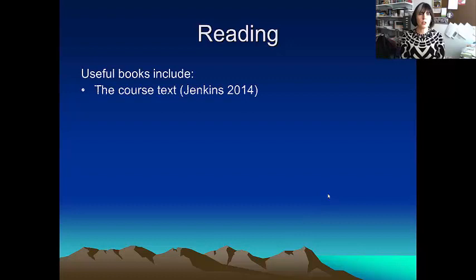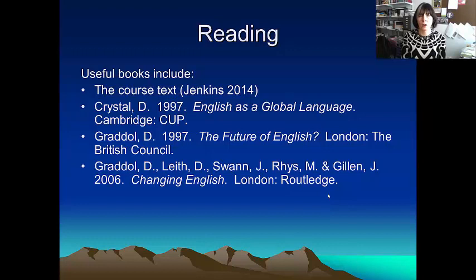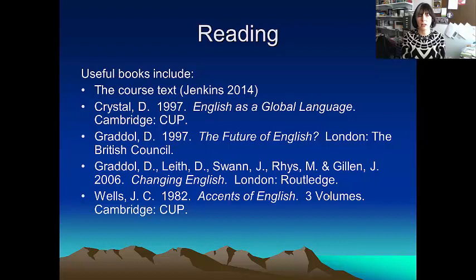Useful books for this include the course text, but also things produced by David Crystal — English as a Global Language — David Graddol, who's written a number of different items on world Englishes and the future of English, and also John Wells' book Accents of English. This was produced in 1982 so it's quite old, but it's basically the Bible on anything to do with accent variation in English, whether we're looking at the British Isles or beyond.